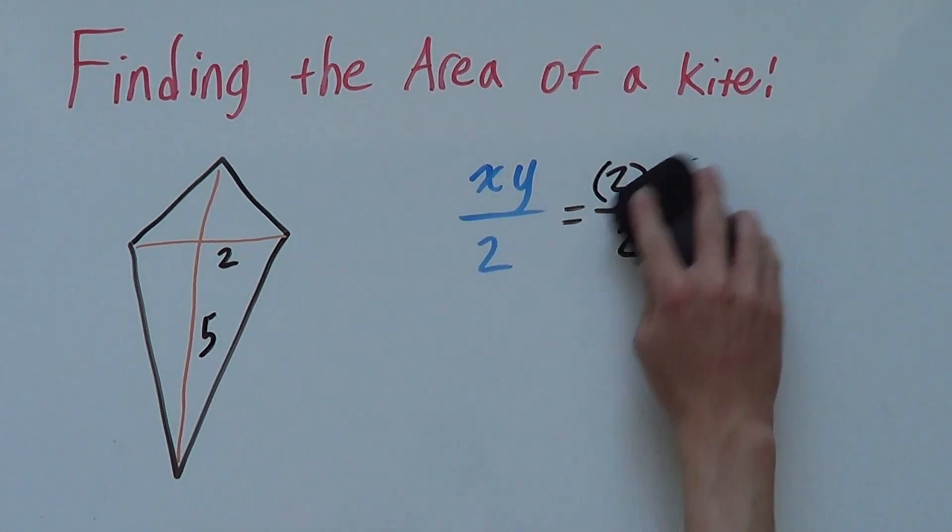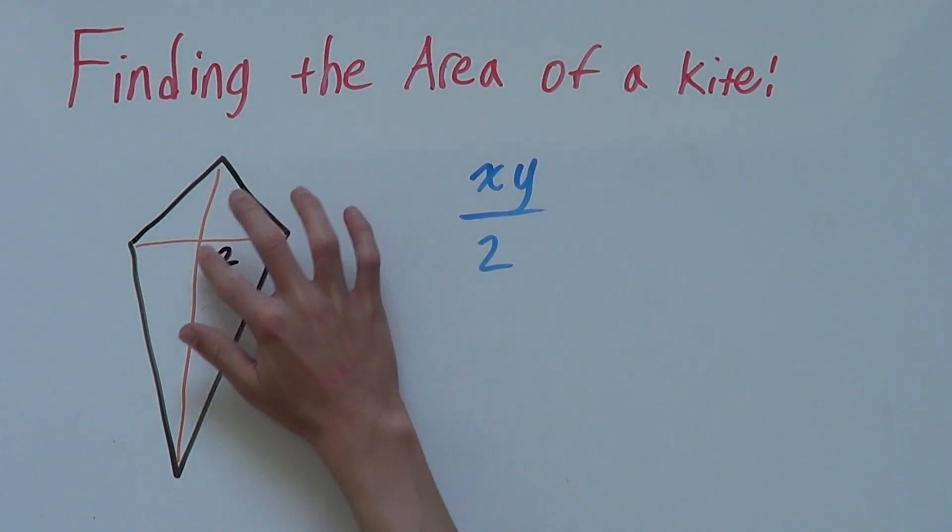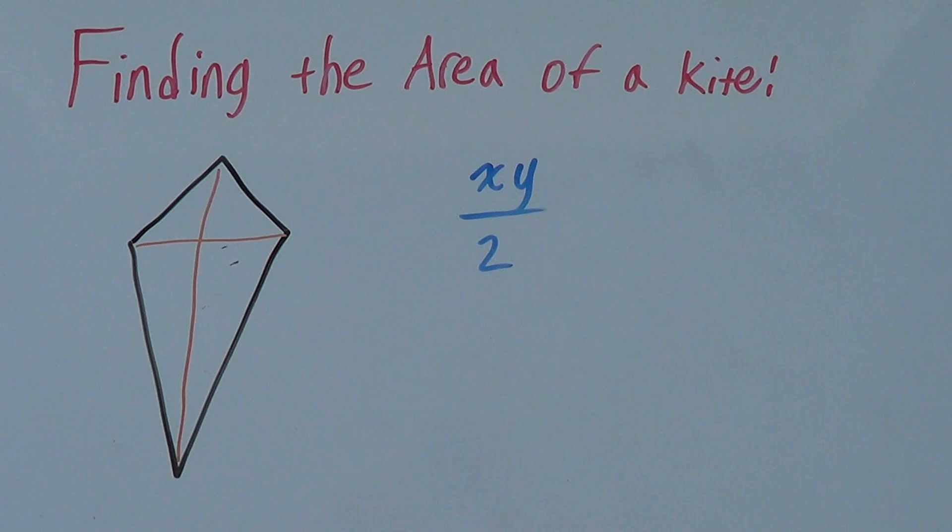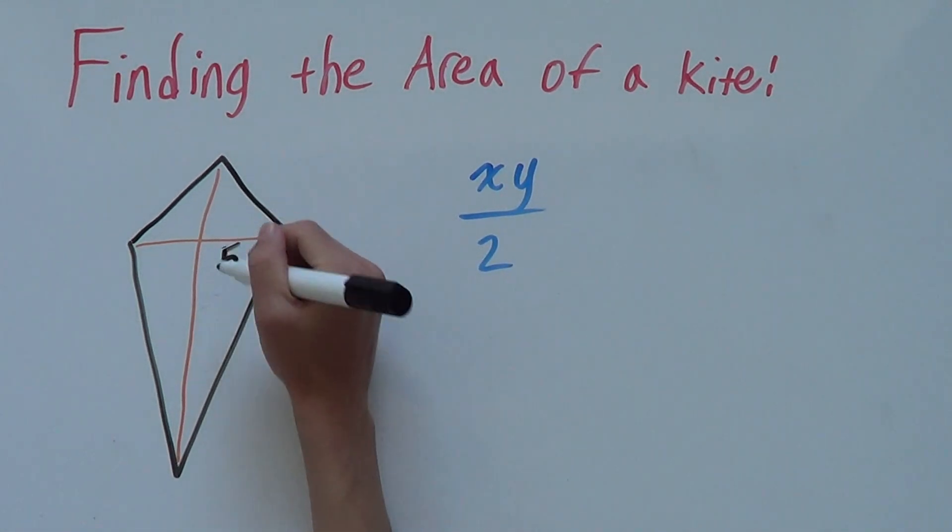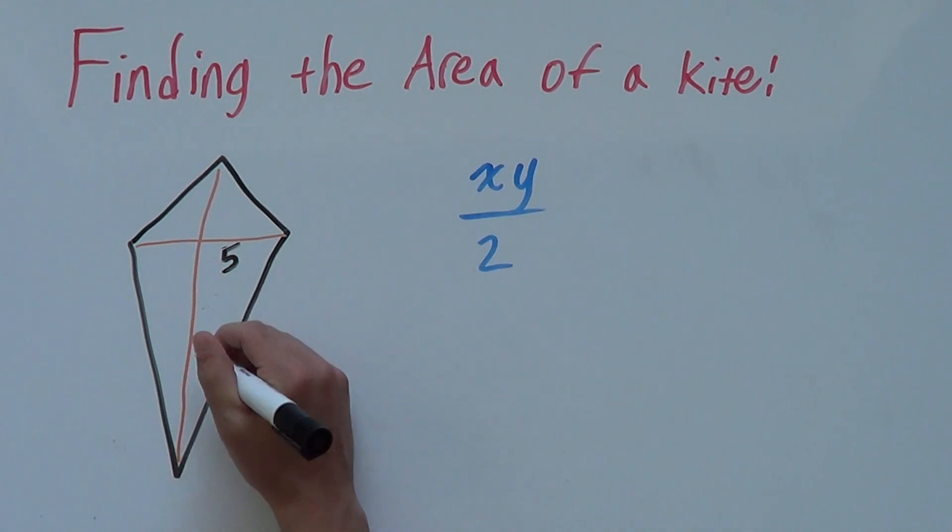We'll look at one more example, just to make sure you know this. This time, let's say this side is 5 and this side is 7. Actually, let's say this side is 6.